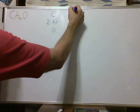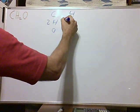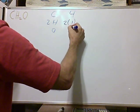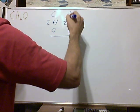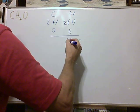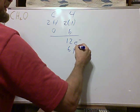So we have carbon, which is four, two hydrogens, each one has one, oxygen which has six. We have twelve electrons, we can divide that by two, and we get six pairs.